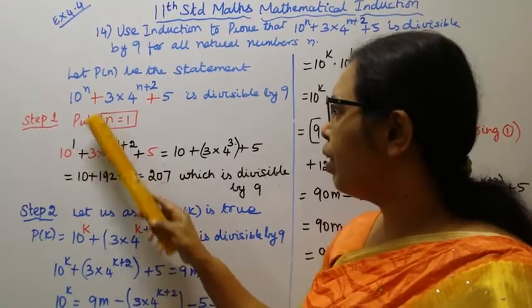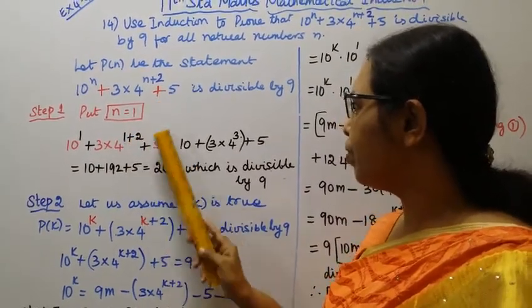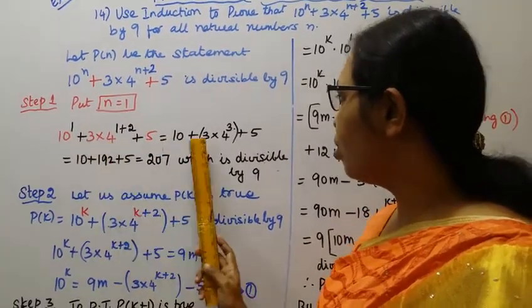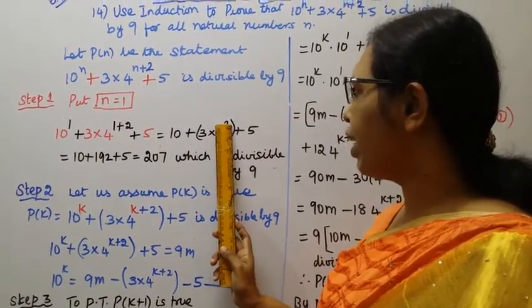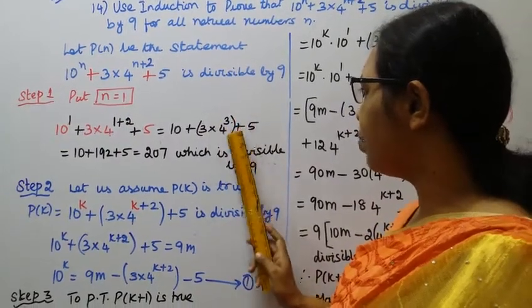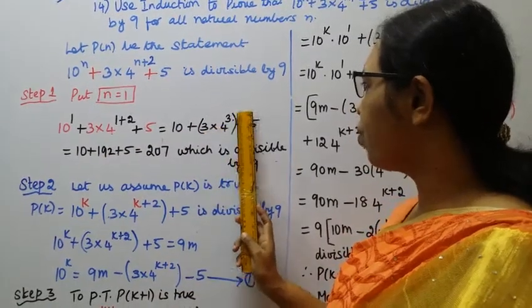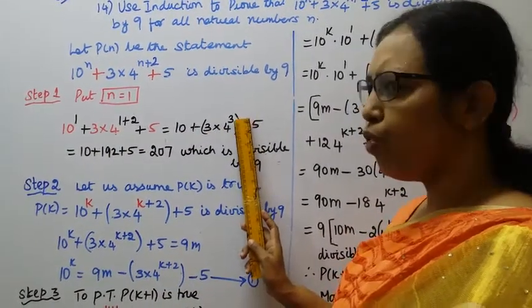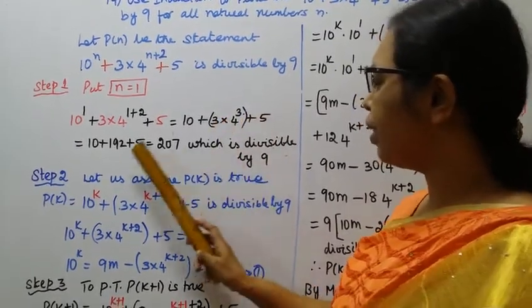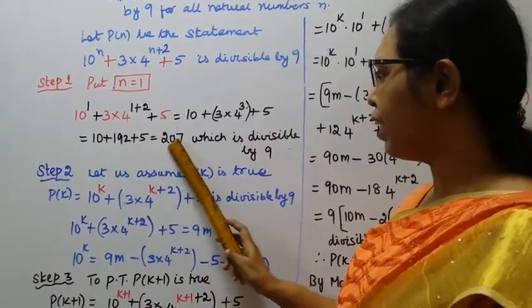10 power 1 plus 3 into 4 power 1 plus 2 plus 5. That is equal to 10 plus 3 into 4 power 3. This is multiplication plus 5. 10 plus 4 into 4 power 3. 4 power 3, 4 fours are 16, 16 fours are 64. 64 into 3, 192 plus 5.